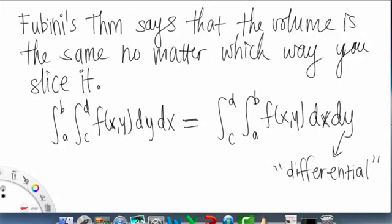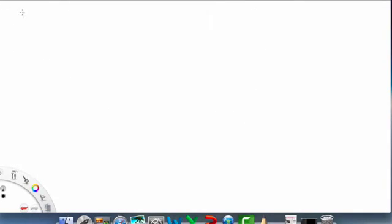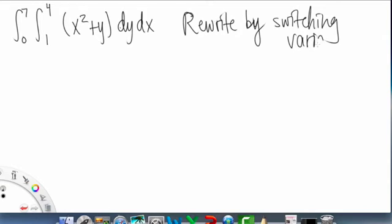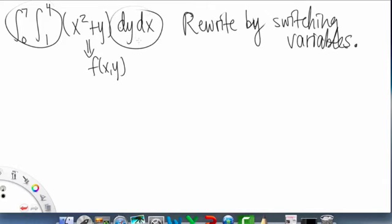All right, so now let's do an example of this. So let's say we're given 0 to 7 and then 1 to 4 of x squared plus y dy dx. Okay, so in this example, they just ask you to rewrite it. So rewrite by switching the variables, basically. By switching variables.